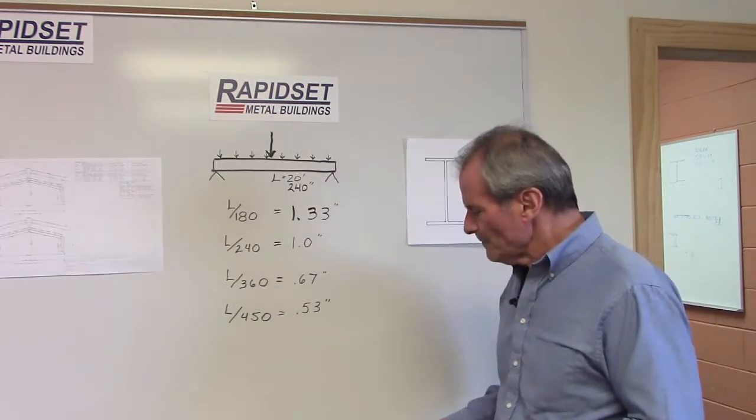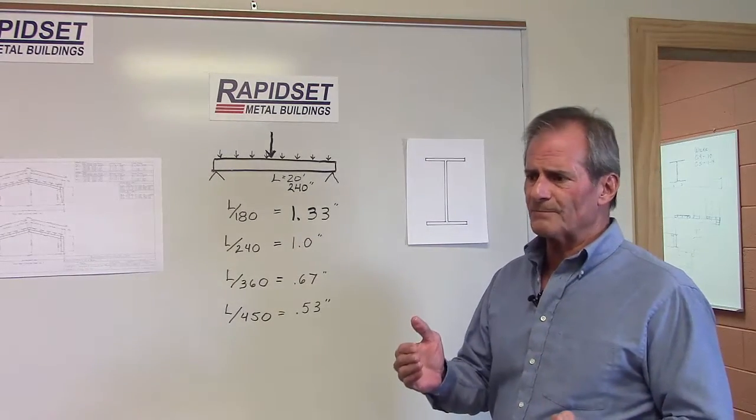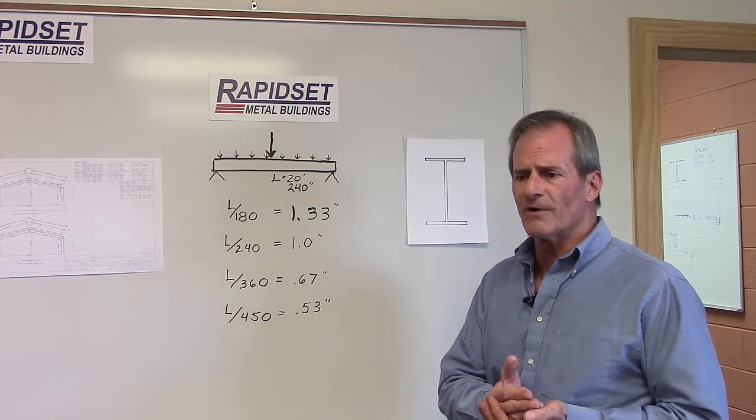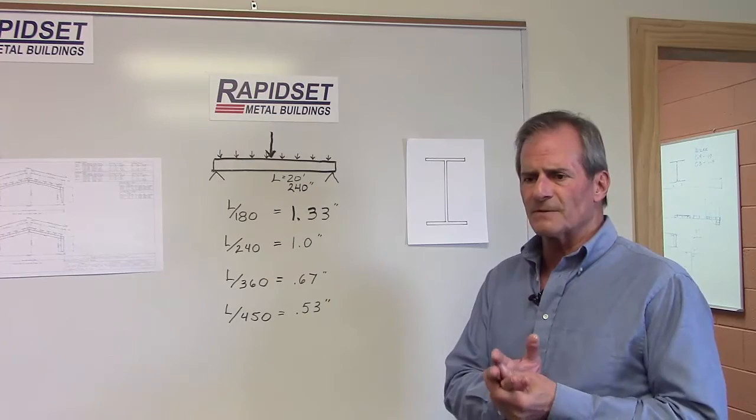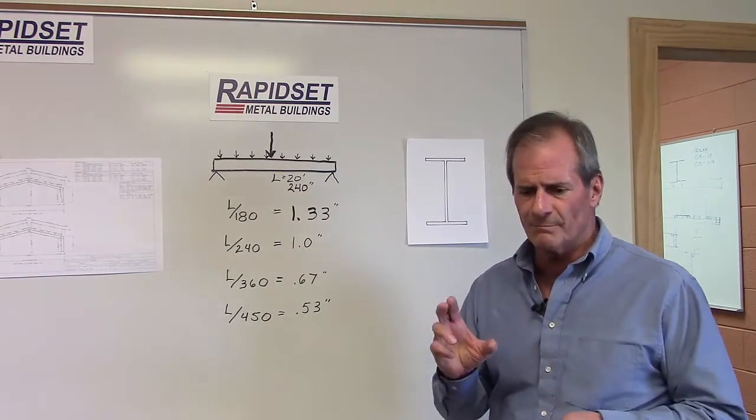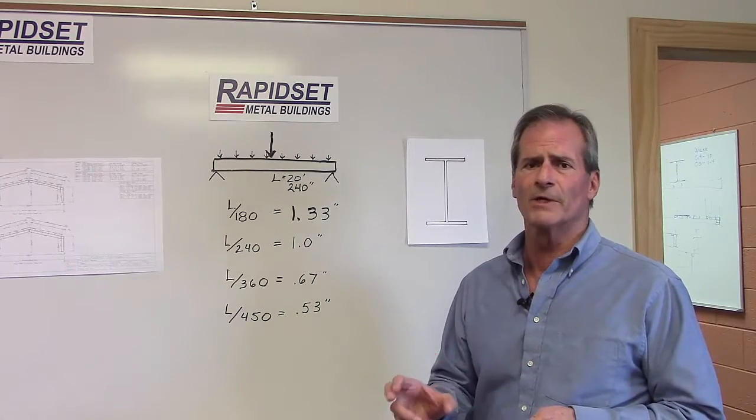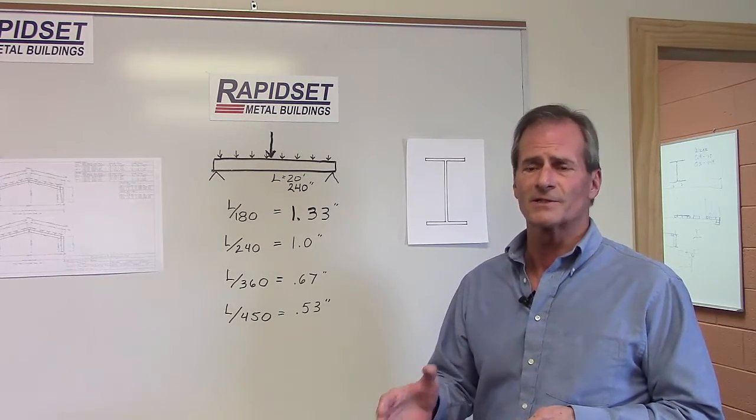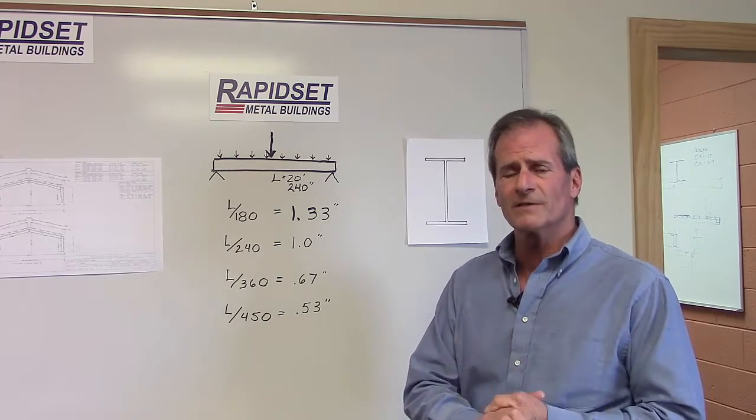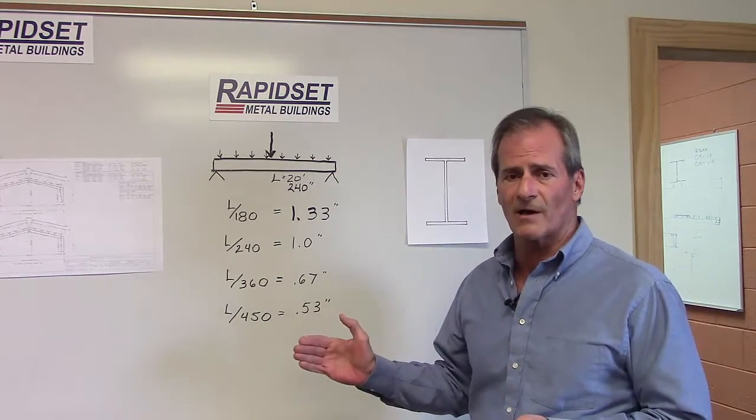Now, there are many different areas or categories that buildings can fall under in this building code. This big ugly book that is not nighttime reading, it'll give you nightmares. But in there, it tells us how much deflection is allowed.